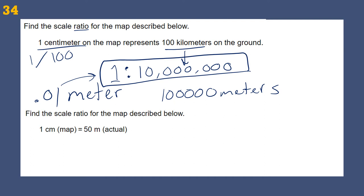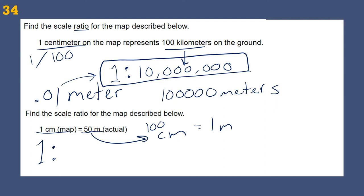Another scale ratio: 1 centimeter to 50 meters. Convert 50 meters to centimeters: 50 times 100 equals 5,000 centimeters. So our ratio is 1 to 5,000. The scale is 1:5,000.